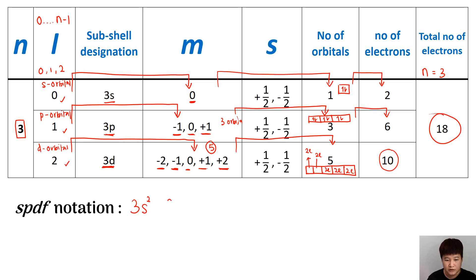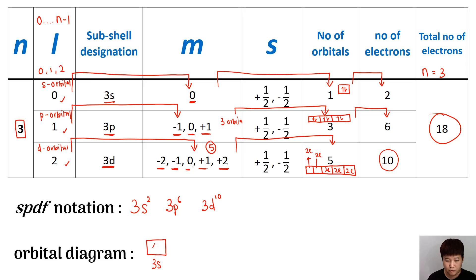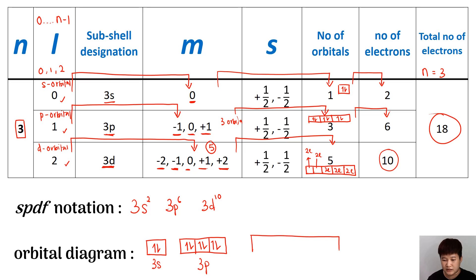The spdf notation for n equals 3 is: 3s² 3p⁶ 3d¹⁰. The orbital diagram for 3s has one box with 2 electrons; 3p has three boxes with a maximum of 6 electrons, labeled 3p; 3d has five boxes with 2 electrons each, giving 10 electrons total. Bear in mind, the number of electrons mentioned is the maximum number that can be placed in each subshell. So when n equals 3, the maximum electrons is 18.